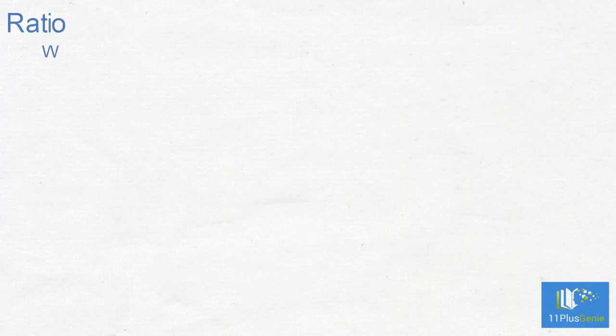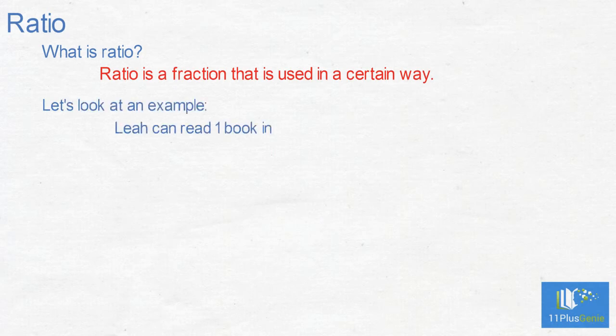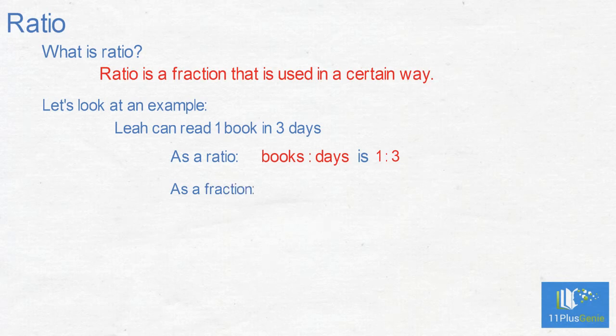Ratio. What is ratio? Ratio is a fraction that is used in a certain way. Let's look at an example. Leah can read one book in three days. We write this as a ratio of books to days as one to three. We can also write this as a fraction, books over days, which gives us one over three.